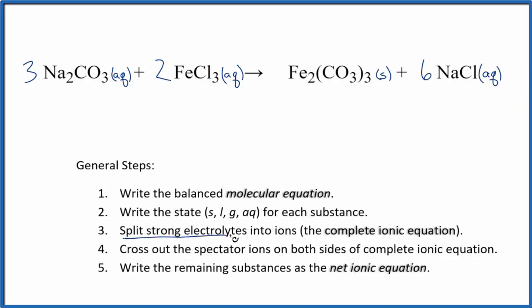Now we can split the strong electrolytes into their ions. This is going to give us the complete ionic equation. So sodium group 1 has a 1 plus ionic charge, and the carbonate ion has a 2 minus charge, actually a good one to memorize. So for sodium, I have Na plus, and then I have 2 of them times 3. So I have a total of 6 sodium ions.